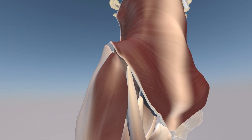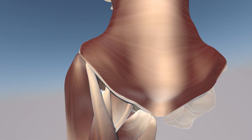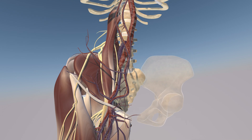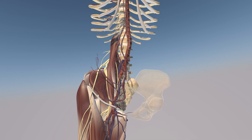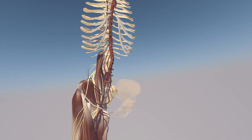Now we remove the internal oblique muscle and see the transversus abdominis muscle. You can also appreciate the inguinal ligament and the complexity of the neurovascular structures within the groin, as well as the psoas minor and major muscles.